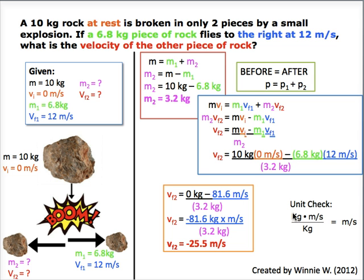To do our unit check, kilograms times meters per second divided by kilograms is equal to meters per second, which is the unit of our final answer.